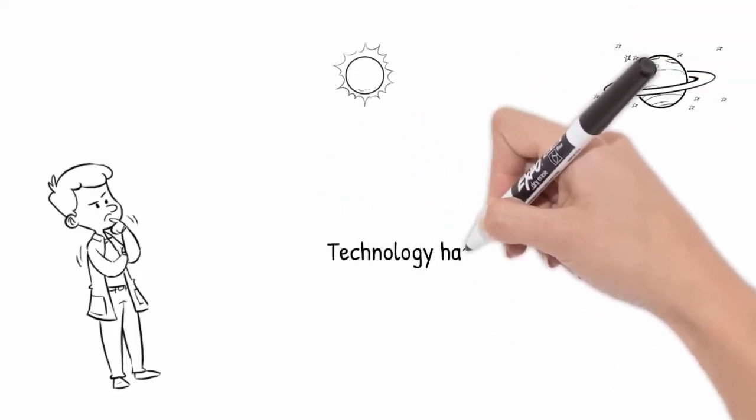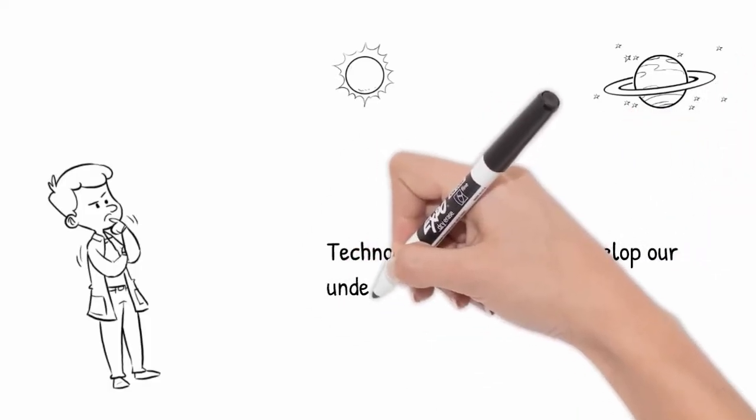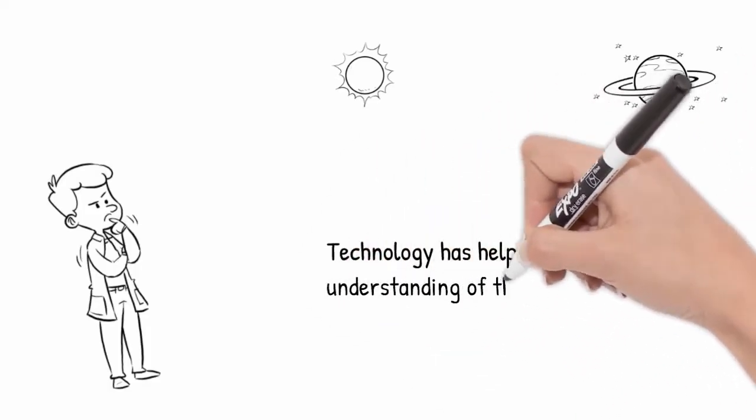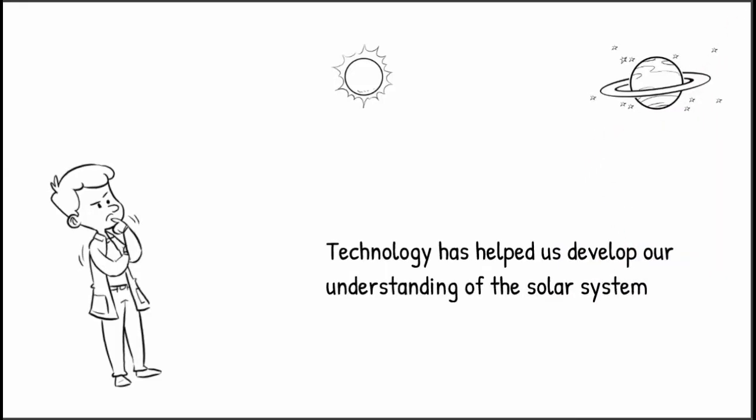Technology has since come a long way and enabled us to see and learn so much more about our solar system and further out into space. Two of the most significant technological inventions that have helped our understanding of the solar system include telescopes and satellites.